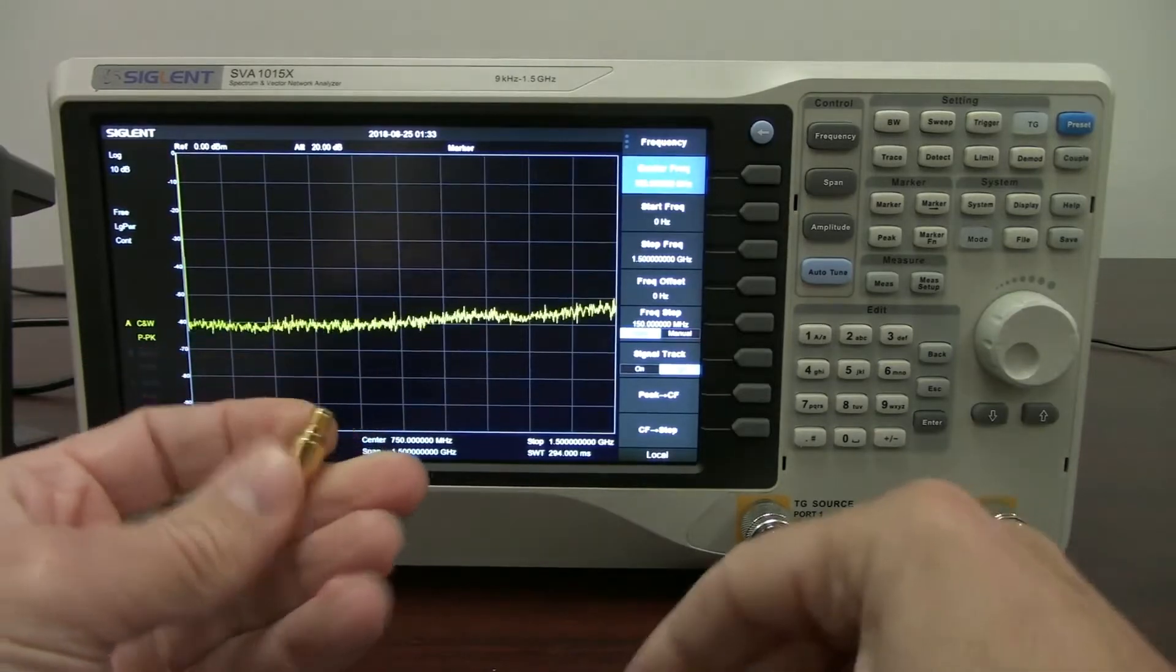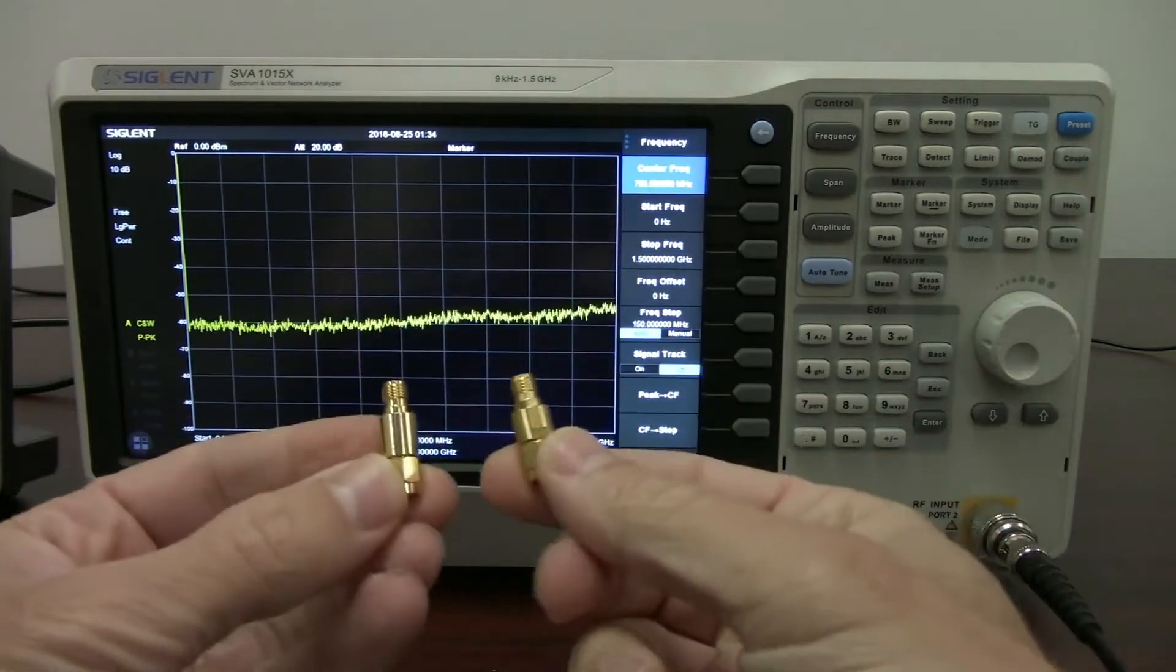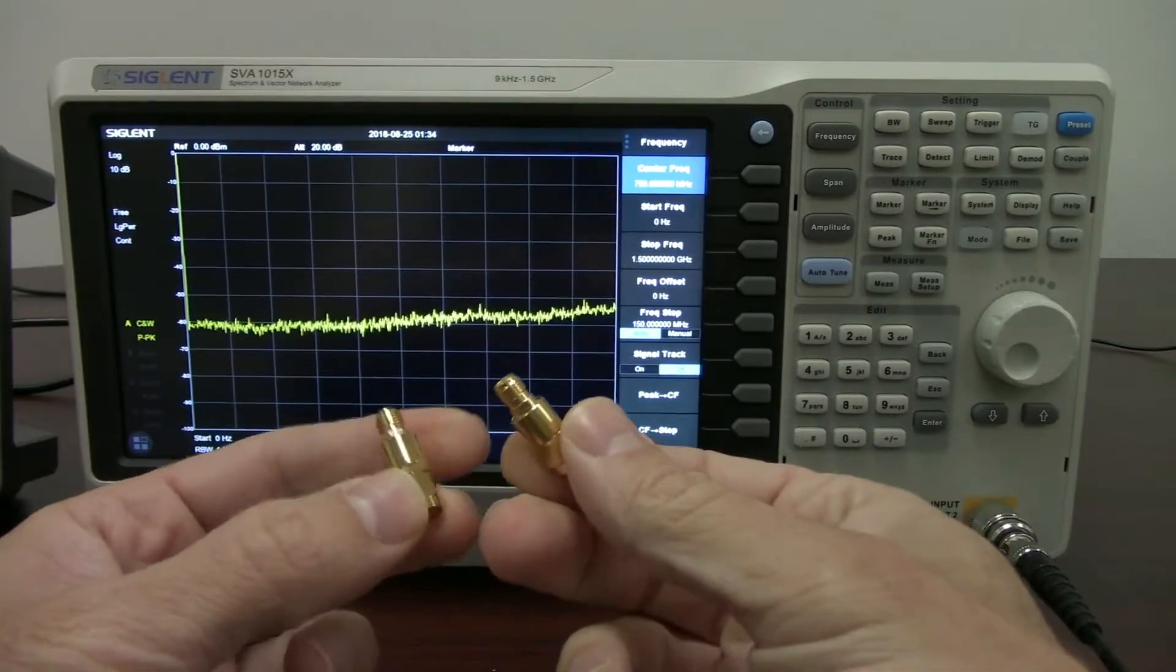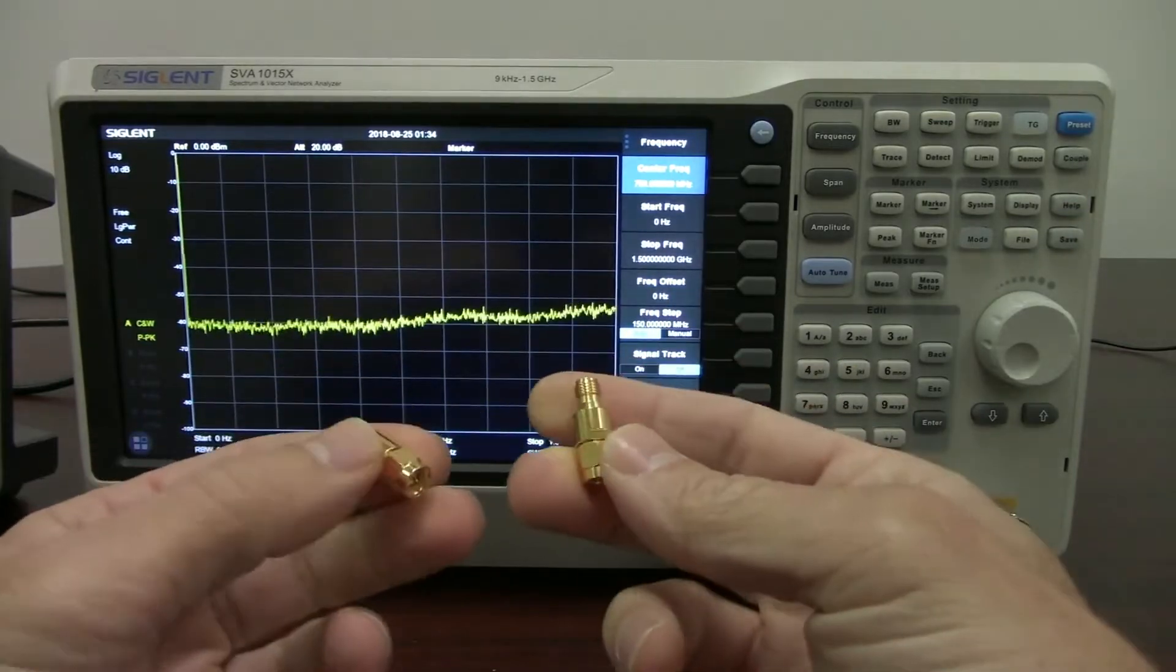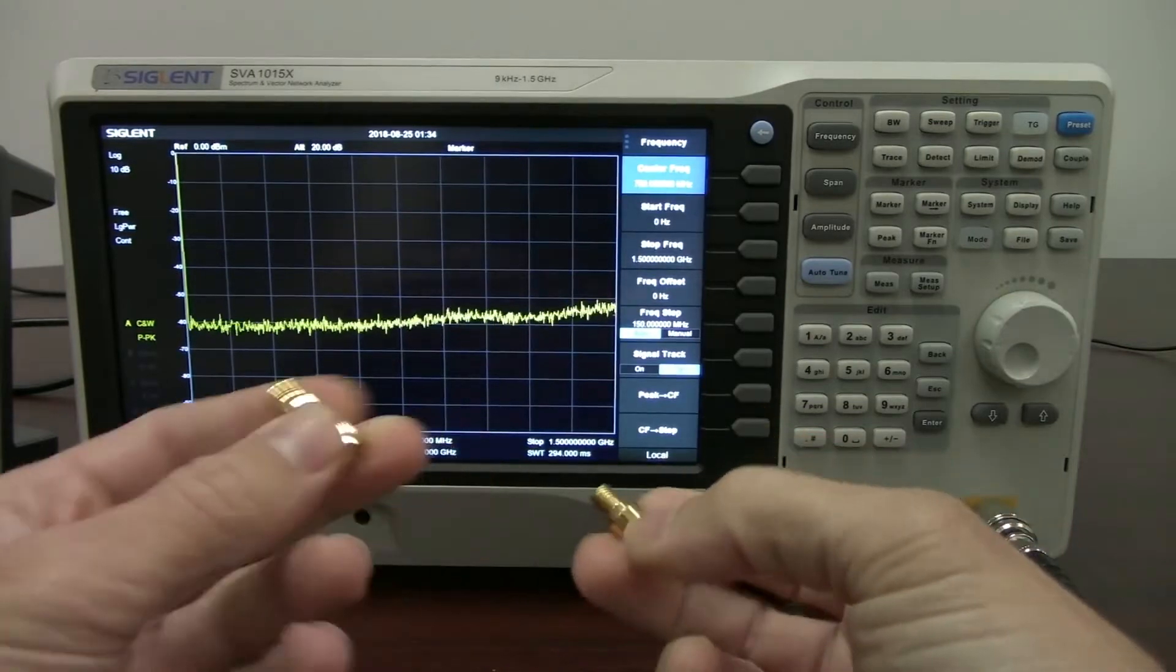Actually, two attenuators. I ordered some SMA attenuators. I ordered two different types, a 10 dB and a 20 dB, and they did not come labeled. So I'm going to use the SVA to help figure out which one of these is the 10 dB attenuator and which one's the 20.